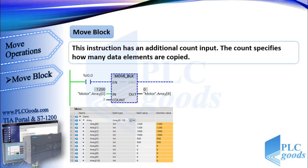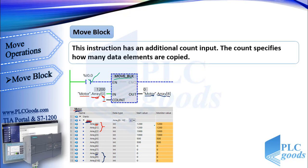Let's see what this simple ladder program does. Here is a move block instruction. As you see, its IN input refers to the motor data block and array with number 0. At the next input, count, we have number 3. So this instruction is going to move these three values. The output address refers to the motor data block, array with number 8. So when the IN input is activated by this contact, the first 3 values will be copied to the last 3 addresses.